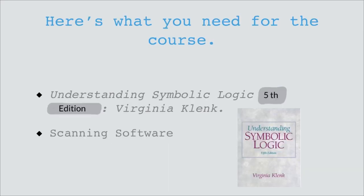What do you need for the course? First, there is the textbook: Understanding Symbolic Logic, fifth edition. There are several different editions available — a third and fourth edition are sometimes still available — but you really do need the fifth edition. The exercises I've assigned as homework are all referenced to the fifth edition. Earlier editions have many of the same problem sets, but the numbers don't line up. So you must have the book; we will be using it and you'll be expected to read it. The course is designed around the Virginia Klenk Symbolic Logic textbook, and the references I make in the video lectures are to this edition.